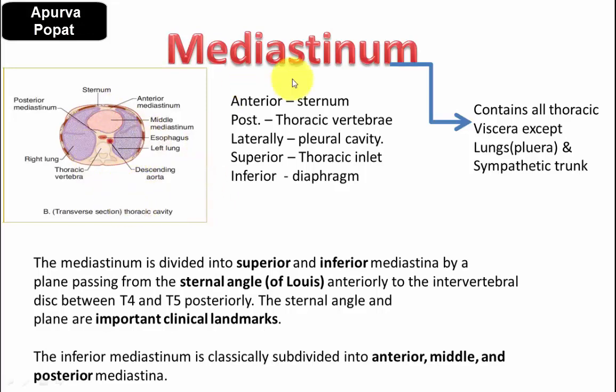The mediastinum is divided into superior and inferior mediastinum by a plane passing from the sternal angle anteriorly to the T4-T5 intervertebral disc posteriorly. The sternal angle, also called the manubriosternal angle or angle of Louis, is an important landmark dividing superior and inferior mediastinum. The inferior mediastinum is further divided into anterior, middle, and posterior mediastinum.